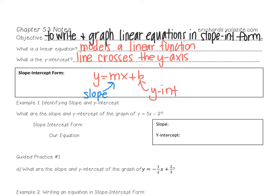For example 1, when they want to know what slope and y-intercept is from an equation, I'm going to write slope-intercept form right above my equation. Then I'm going to identify slope, which is the number in front of the x — that's 5. And then the y-intercept, which is the constant, and that's negative 2. And that's all you have to do.